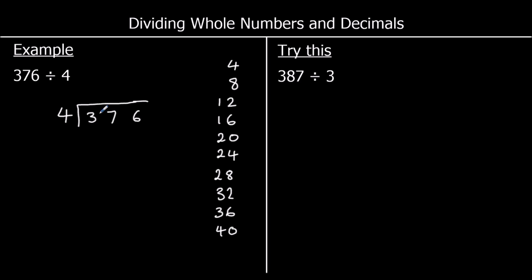We start with the hundreds column — the biggest one first. So how many 4s go into 3? Well, none. No whole 4s go into 3, so there's going to be 0 in the hundreds. But we've got 3 left over, so I'm going to shift that down into the tens and have 37 in the tens.